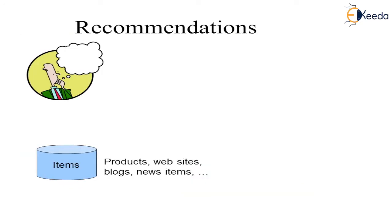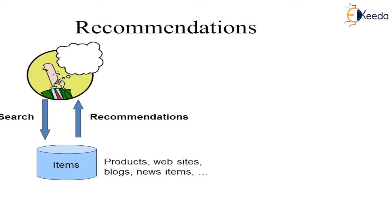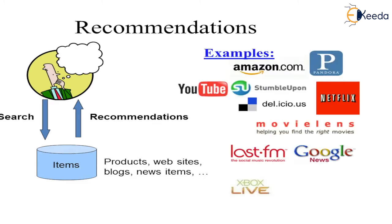How does a recommendation model work? First of all, a customer buys some items. Everything is stored in a dataset — products, websites, blogs, new items, whatever the customer does. Then we recommend to the customer what they can buy, what products they should purchase, which website they should visit, and which news is better for them to read, based on their likes and dislikes.